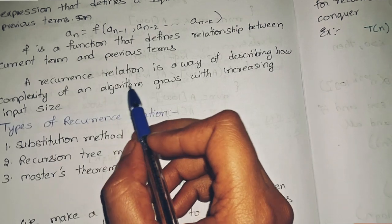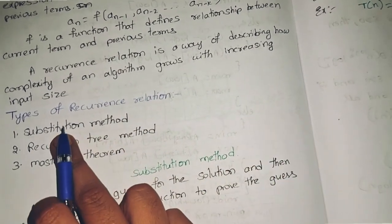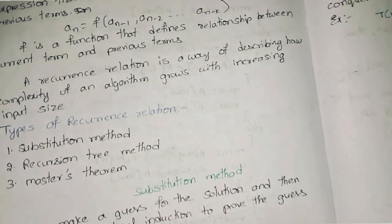Types of recurrence relations: substitution method, recursion tree method, and master's theorem. First we will see the substitution method.